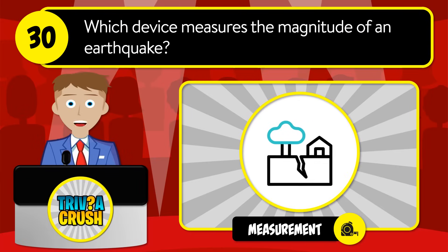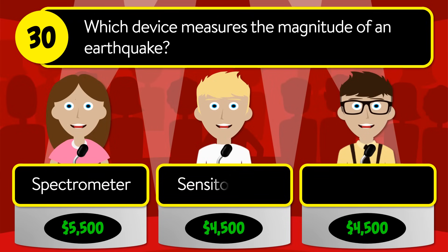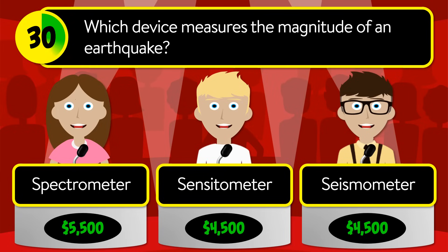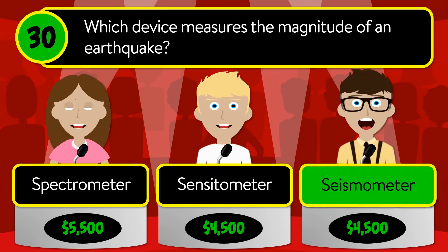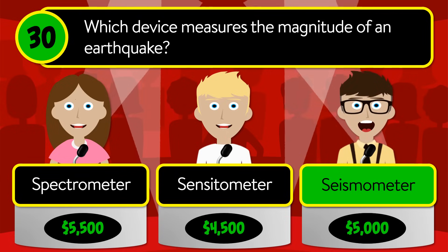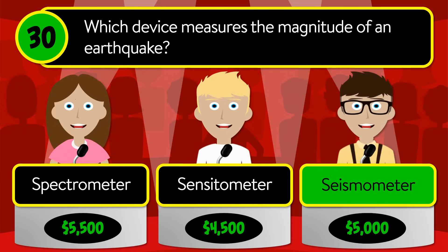Question number thirty: which device measures the magnitude of an earthquake? Is it spectrometer, sensitometer, or seismometer? The correct answer is seismometer.